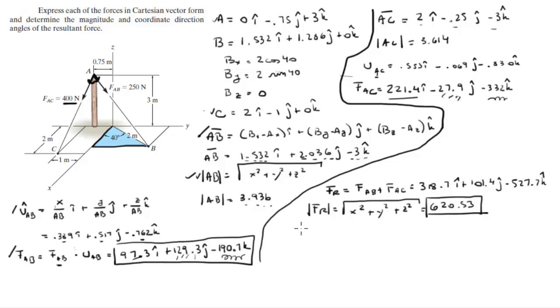And to find the direction angles, you got to do the cosine inverse of each of the components divided by the magnitude: x over the magnitude, y over the magnitude, and z over the magnitude.